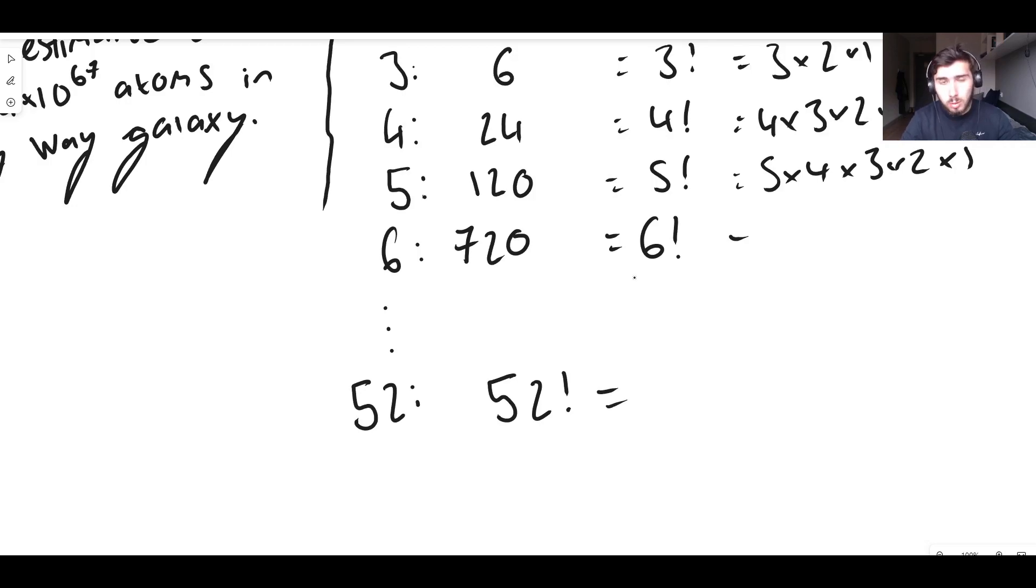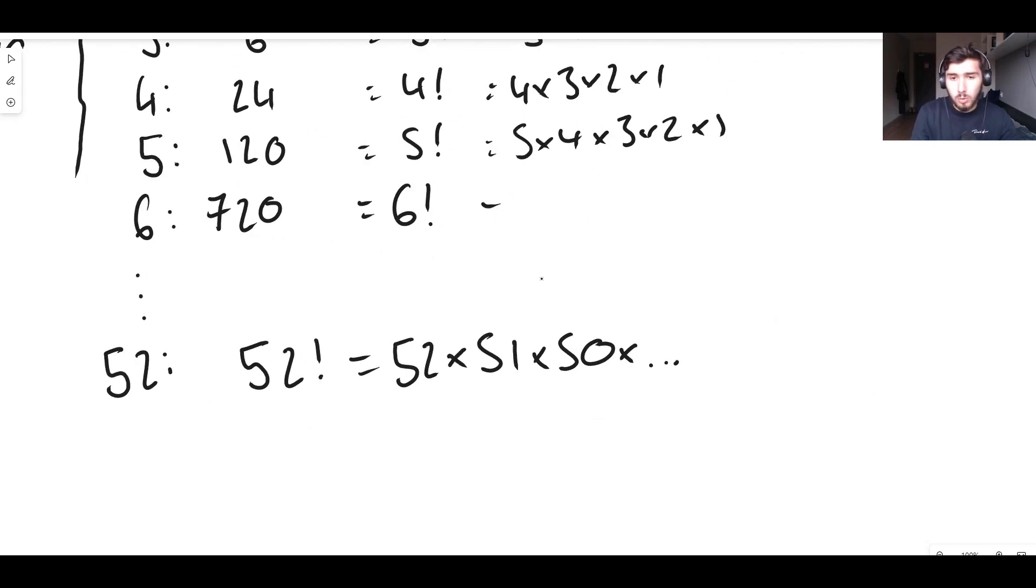Well this is equal to 52 factorial, which is an incomprehensibly large number. It's equal to 52 times 51 times 50 times all of the numbers. I won't write all of them obviously until we get to 1.